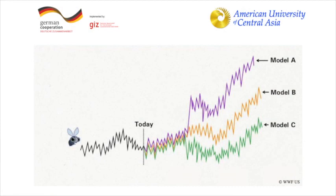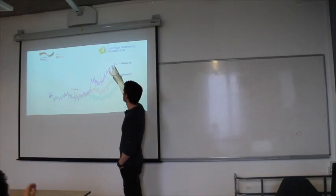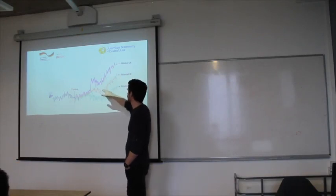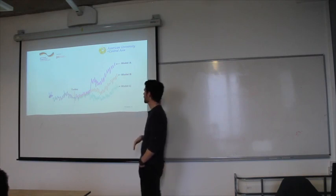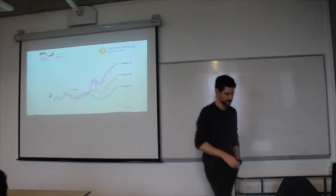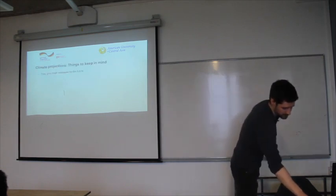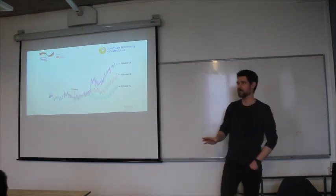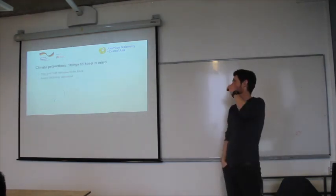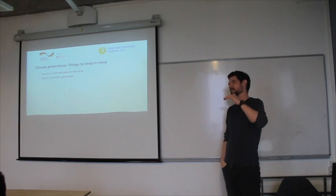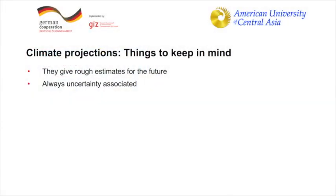And then basically when you take different models, basically from every model you can also get different outputs. So you look at the same time period, and you have model A says, let me assume now this is my temperature, there's a really significant temperature increase, more medium what it sees there. C okay is slightly temperature increase. Is that an understanding at all? So this is what I meant, there's always uncertainty associated, because different models give different projections.